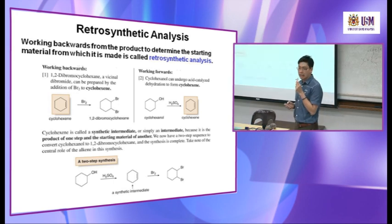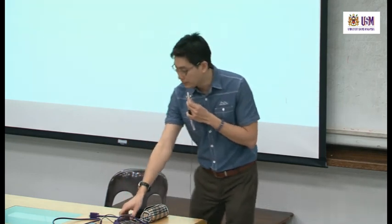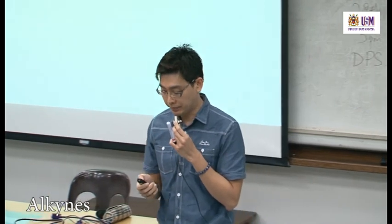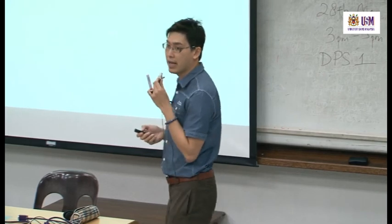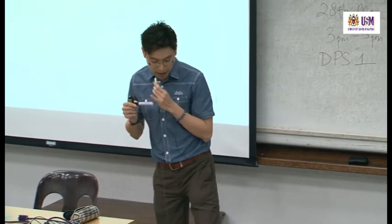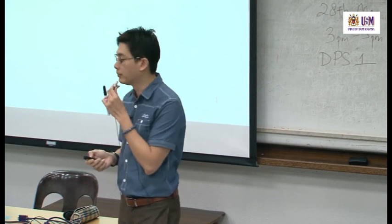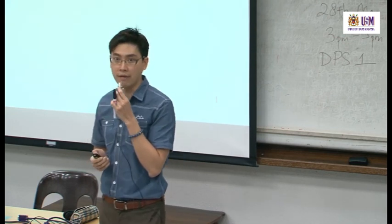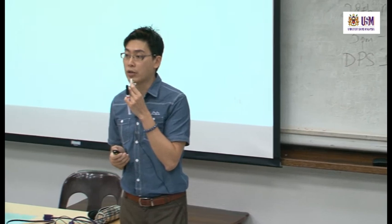That's chapter 10. Please sign your attendance. We now continue with chapter 11 — alkynes. Alkyne means a triple bond; alkene has a double bond. You have come across alkynes before — how to synthesize them from geminal and vicinal dichlorides or dibromides.